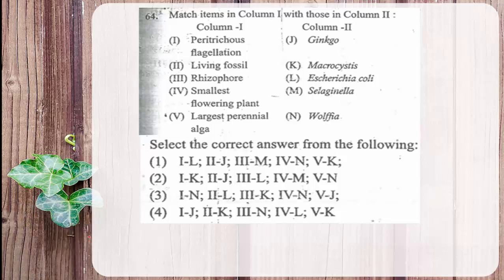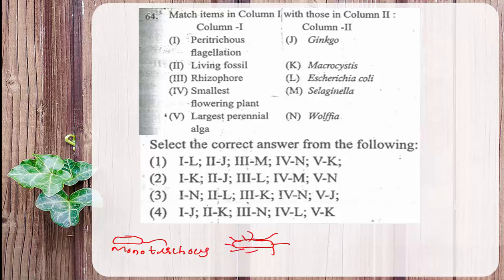In bacteria, locomotion is carried out by flagella. Some bacteria have a single flagellum — called monotrichous. The term given here is peritrichous, meaning the entire bacterial surface shows the presence of many flagella all around, which help in locomotion.